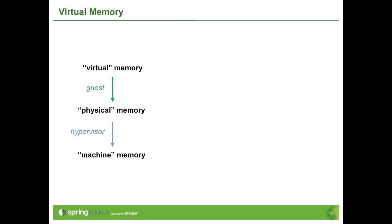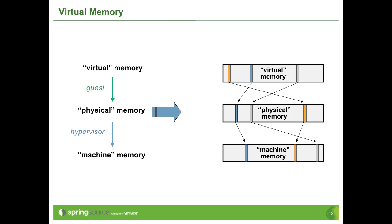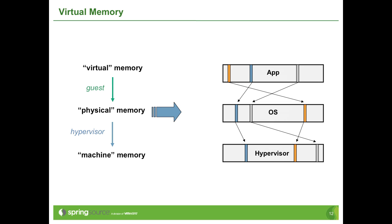So we have three layers of memory: virtual memory, which maps to physical memory, which maps to machine memory. The application allocates memory from the operating system, which consumes memory on the hypervisor. The top two layers are encapsulated within a virtual machine.